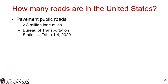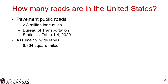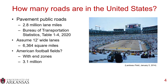Let's look at just how many roads there are in the United States to talk about the scope of what pervious pavements could do. For public roads, there are 2.8 million lane miles of paved public roads, according to the Bureau of Transportation Statistics, Table 1-4 from 2020. Assuming 12-foot-wide lanes, that's about 6,400 square miles of pavement — equal to 3.1 million American football fields.